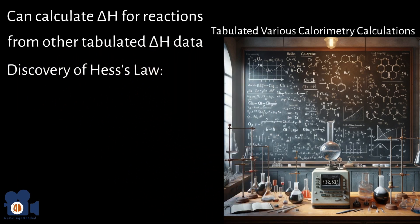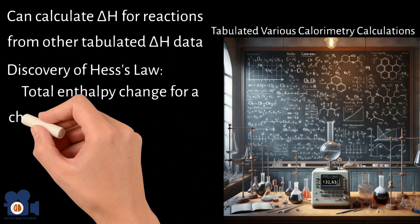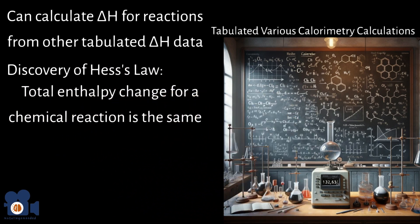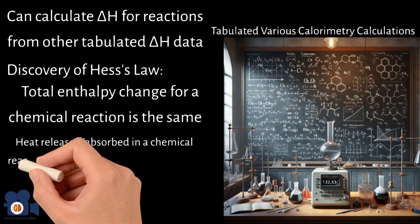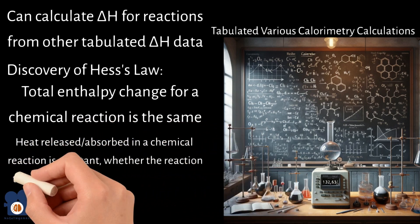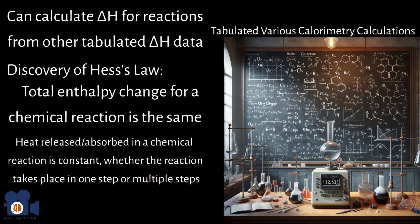Hess's law is a principle in chemistry that states the total enthalpy change for a chemical reaction is the same regardless of the pathway by which the reaction occurs, provided the initial and final conditions are the same. Simplifying this law implies that the heat released or absorbed in a chemical reaction is constant, whether a reaction takes place in one step or multiple steps.